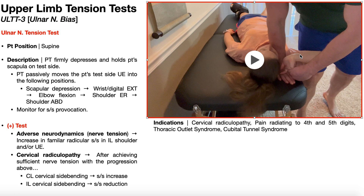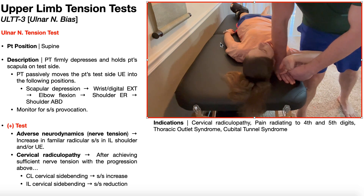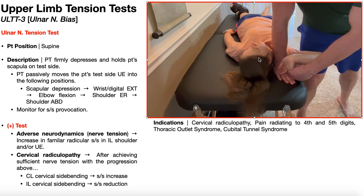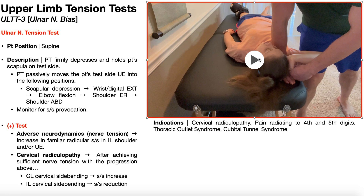Sometimes we want to rule up a cervical radiculopathy, so we need to involve a neck movement. At any point in this progression of movements, once they have sufficient neural tension, we ask them to side bend away from the affected side — contralateral cervical side bending. If it is more cervical in nature, such as a cervical radiculopathy, that should increase those nerve symptoms. Conversely, when we have her side bend toward the affected side — ipsilateral side bending — that should actually reduce those symptoms. The same rules apply whether it's adverse neurodynamics or cervical radiculopathy for all nerve tension tests.